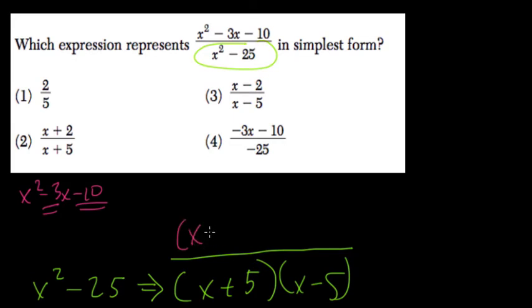Because x minus 5, or using negative 5, and then x plus 2. If you multiply negative 5 and 2, you get negative 10. If you add them, you get negative 3.